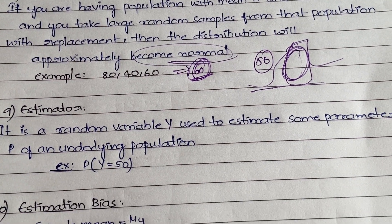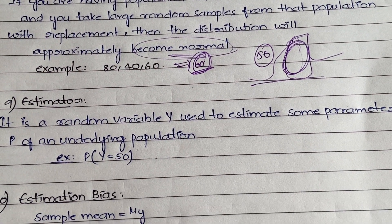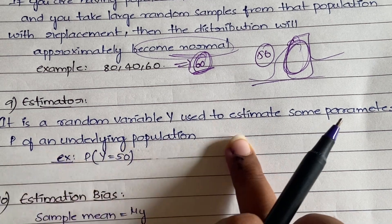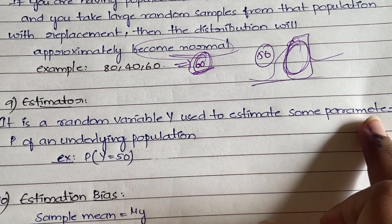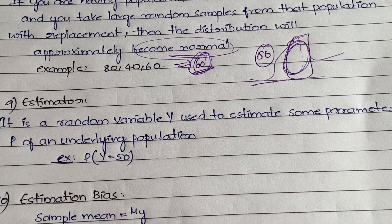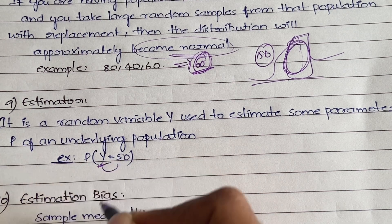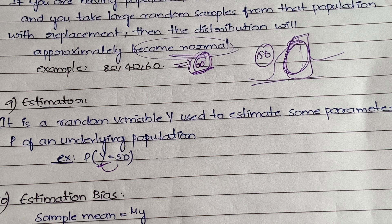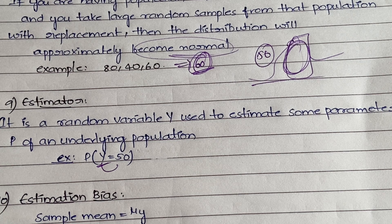The ninth definition is the estimator. An estimator is a random variable y which is used to estimate some parameter p of an underlying population. For example, y could represent age equal to 50, or height equal to 50 centimeters, or weight equal to 50 kg — some parameter you are observing from the underlying data.